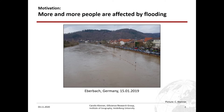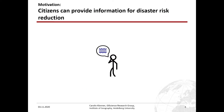How can they protect themselves better and how can we support? The answer is a source of information which is currently not used so often: the citizens themselves. Because people in affected areas have knowledge about flood levels, frequency of floods, and they have specific ways of dealing with these floods. And this knowledge is very important for the disaster risk reduction process.